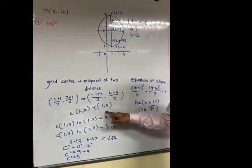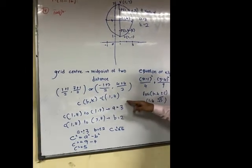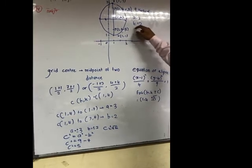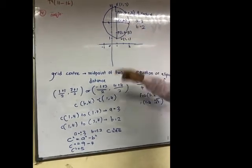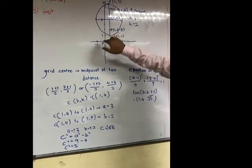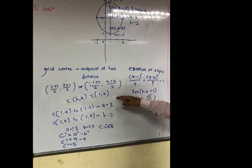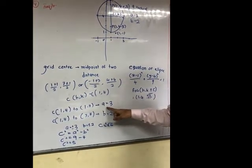So to find A, we find the longest distance. So we take point (1, 4) to (1, 7). So A means y. So 7 - 4, we get distance 3.